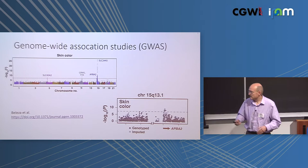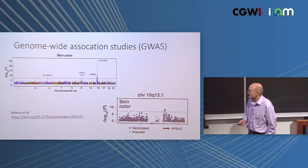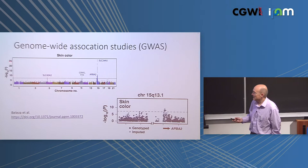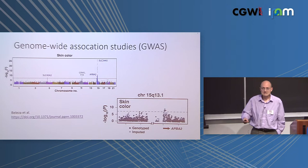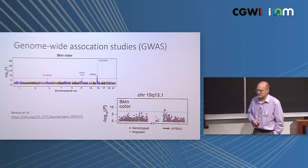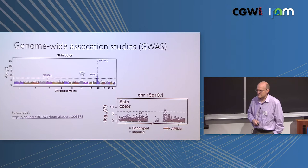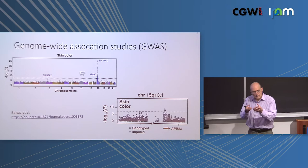The typical output is what we call a Manhattan plot. Every point is a marker being tested for association with a trait — here, skin color. On the y-axis, we have the minus log of the p-value, on a log scale. Higher values indicate lower p-values. We call it a Manhattan plot because we want to see skyscrapers — peaks that shoot up above the genome-wide significance threshold. Even though there may be only one causal variant in a region, you get a whole peak because markers in the region are correlated.